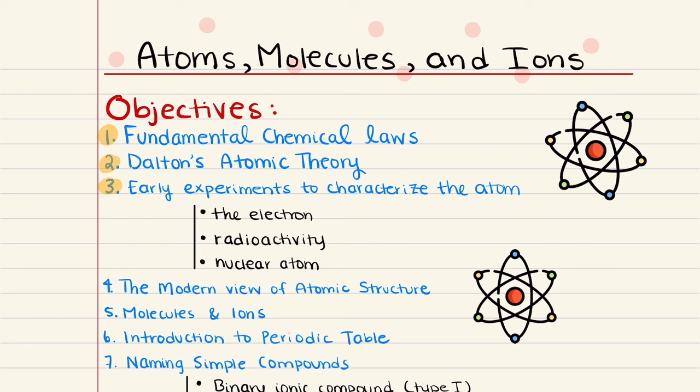Our third objective is a continuation of some of the earlier ideas of the basic structure of an atom. We're going to compare that to our current understanding of an atom before we move into Objective 4, which will further build on the modern view of atomic structure. Here, we're going to discuss what an atom is made of and how atoms of the various elements differ. We'll cover important terminology: atomic number, mass number, atomic weight, atomic mass unit, moles, and molar mass.